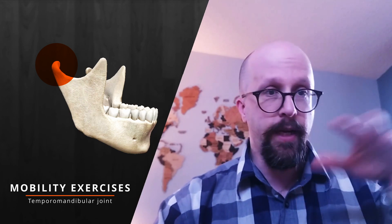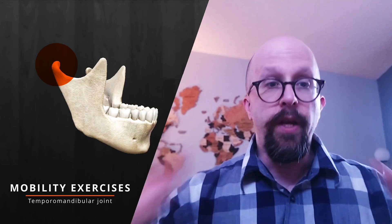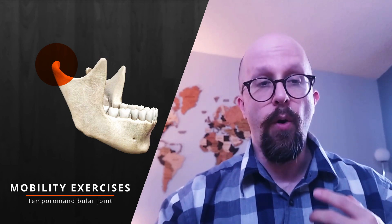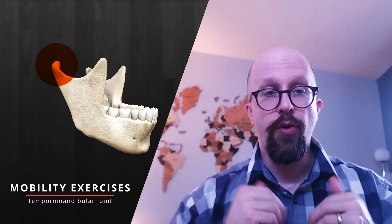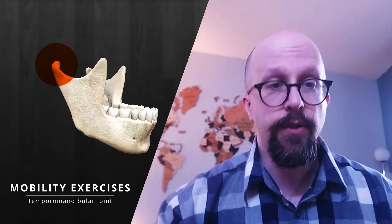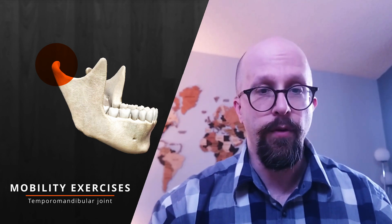It allows the TMJ to travel through all three planes of movement. We can open our jaw, close it. During that motion of opening our jaw, there's actually a translation forward. So we can translate our jaw forwards and backwards. But we can also go side to side. I'm going to take you through those three exercises to help improve all of those movements.